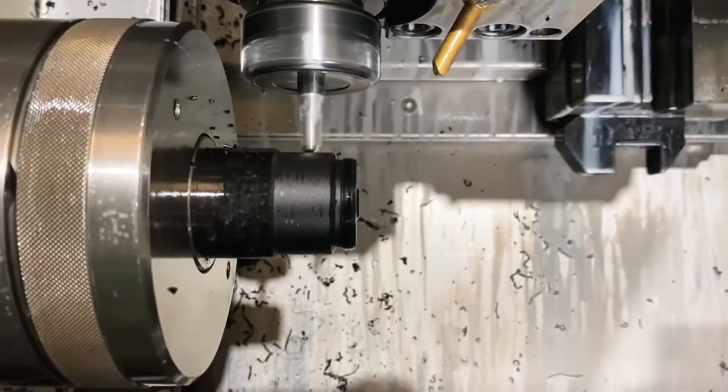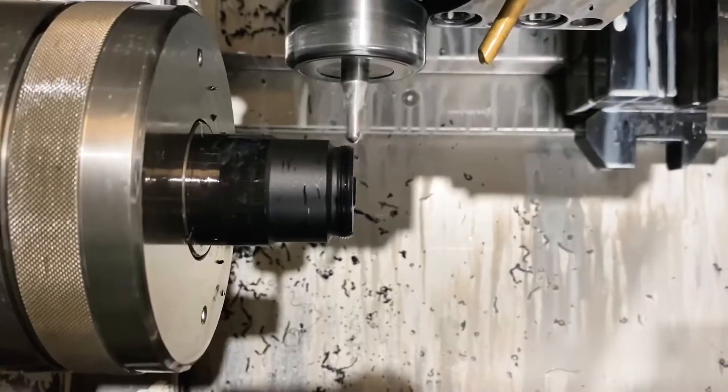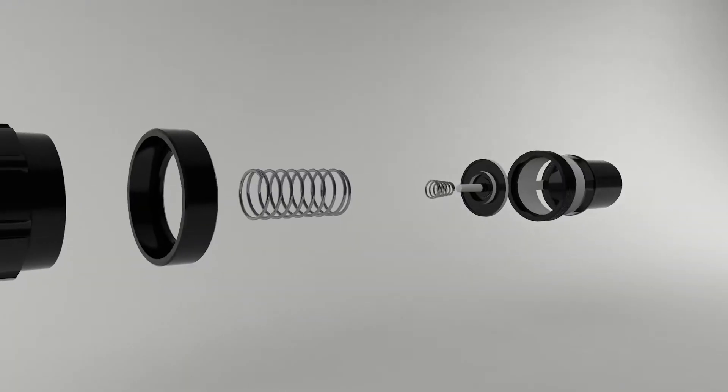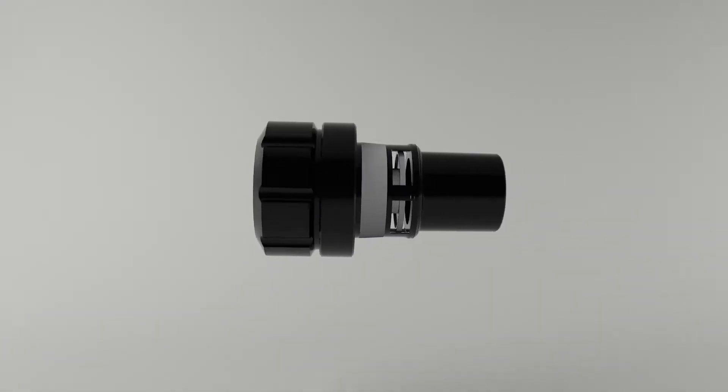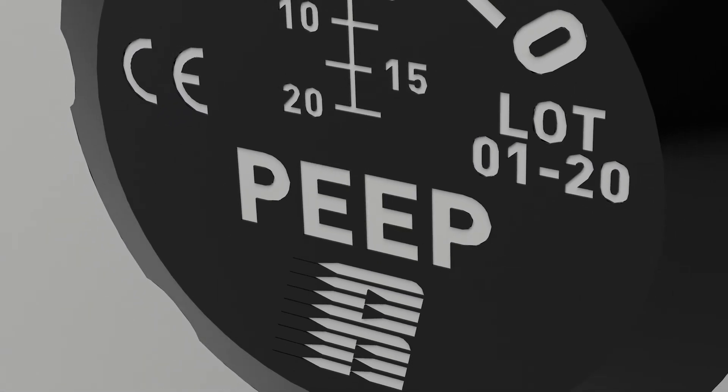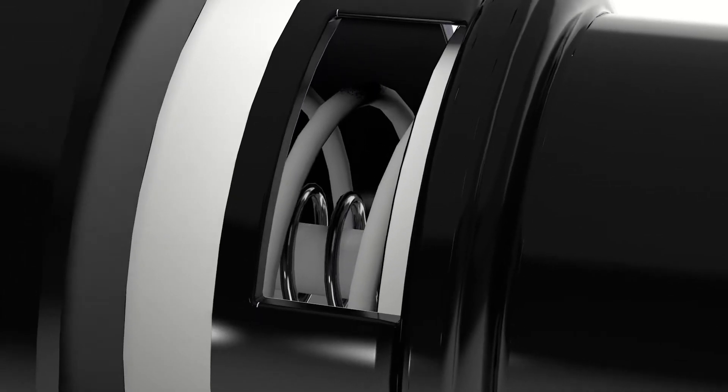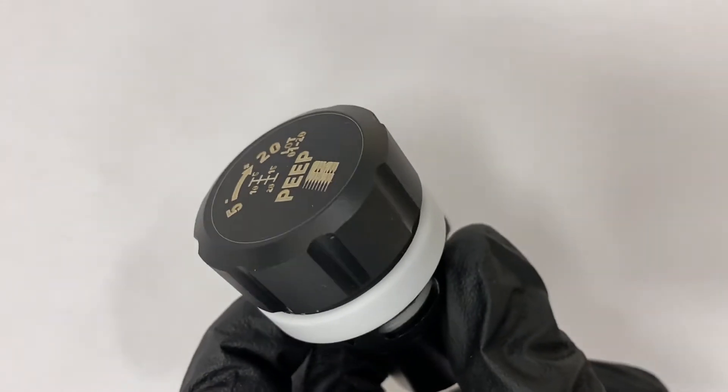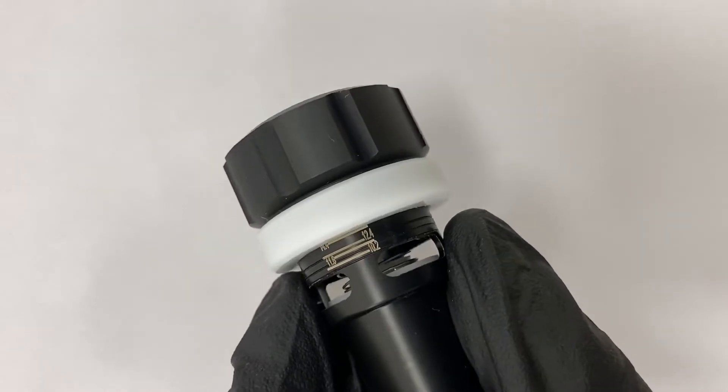It starts with a piece of polyacetal where we machine the surface with a high-precision CNC. We install a non-magnetic stainless steel spring created with an artificial intelligence machine. Afterwards, the spring is thermal treated into a process that helps the metal to remember the new position, achieving a high-accurate product.